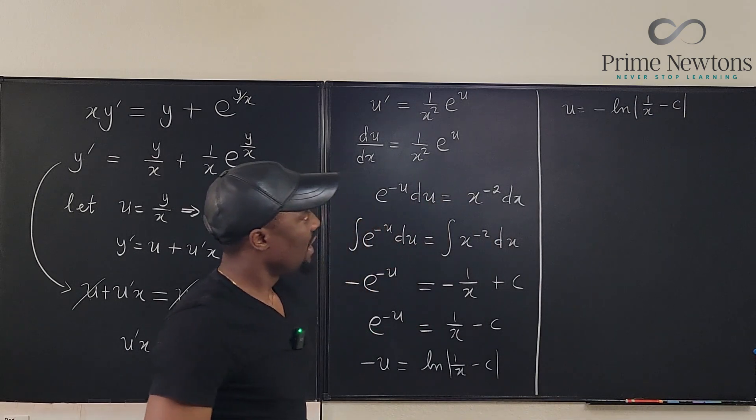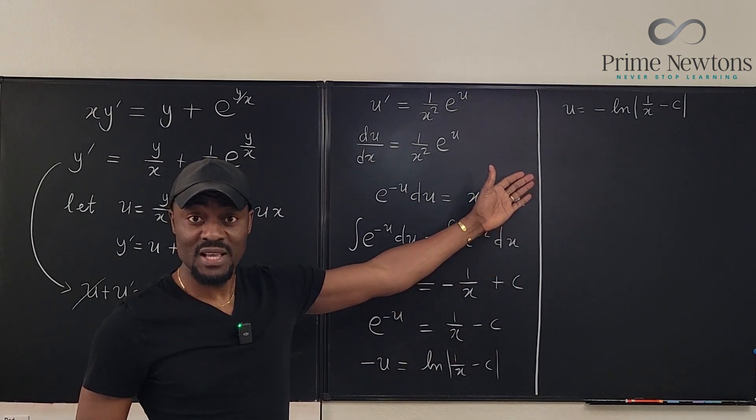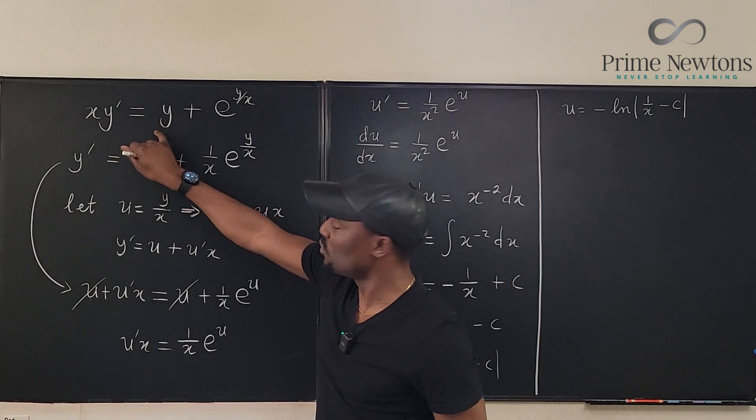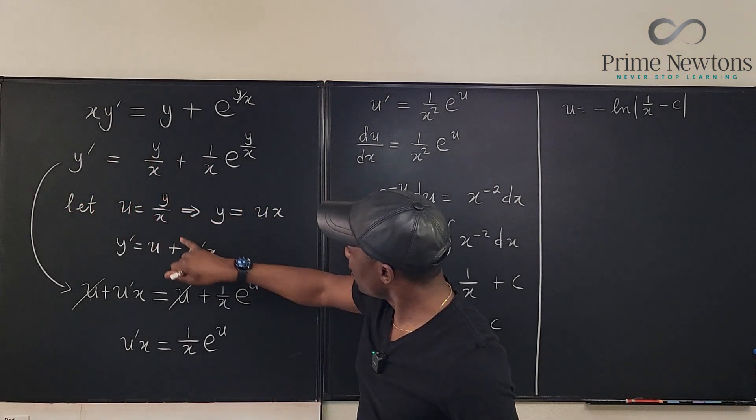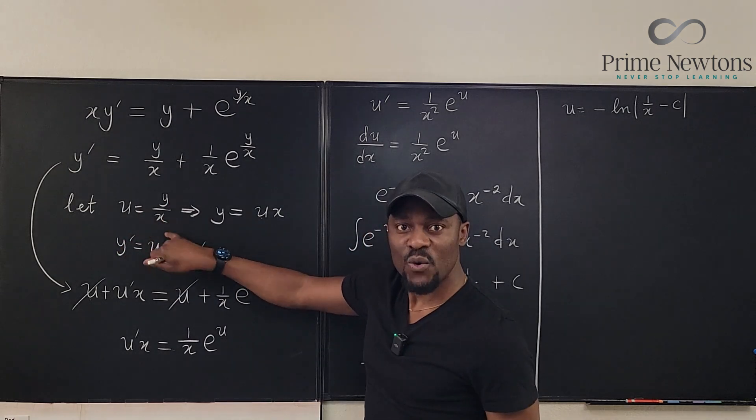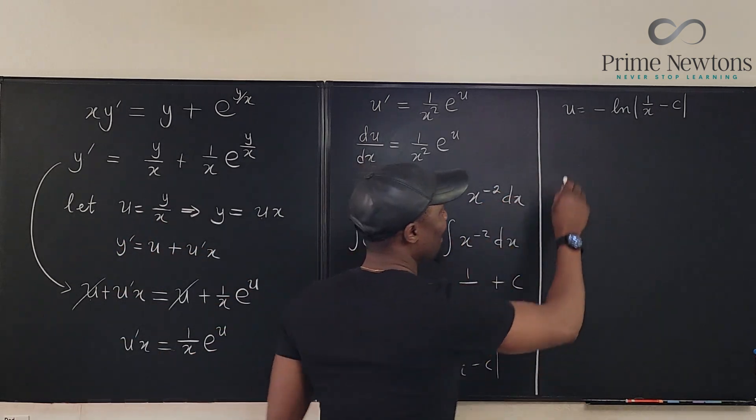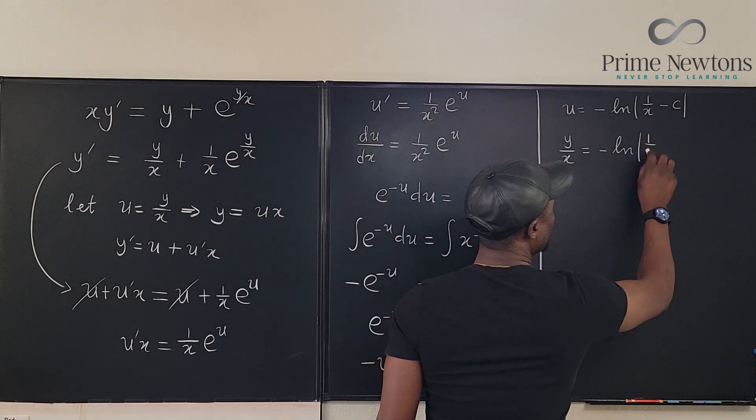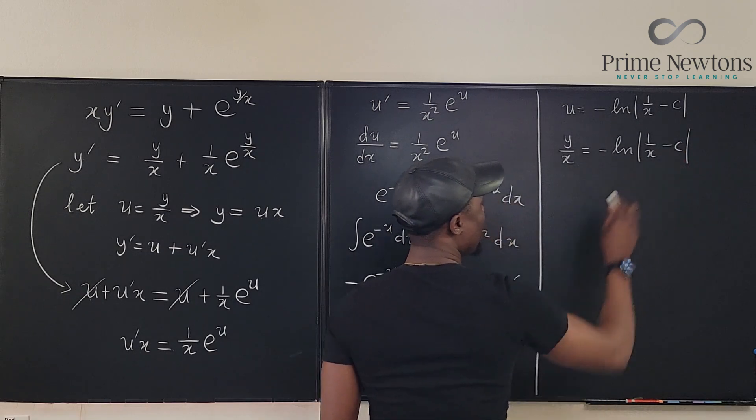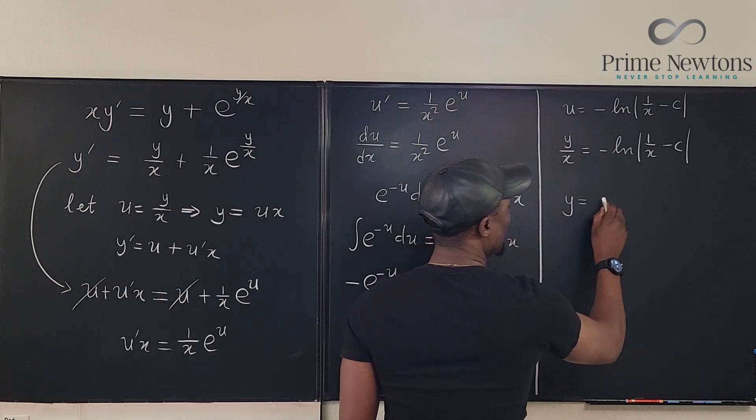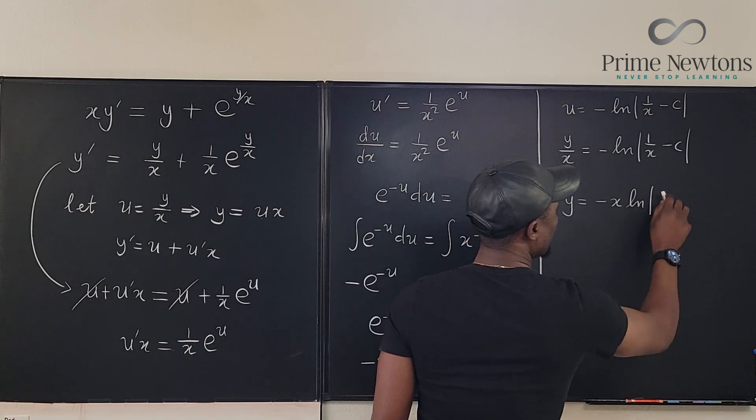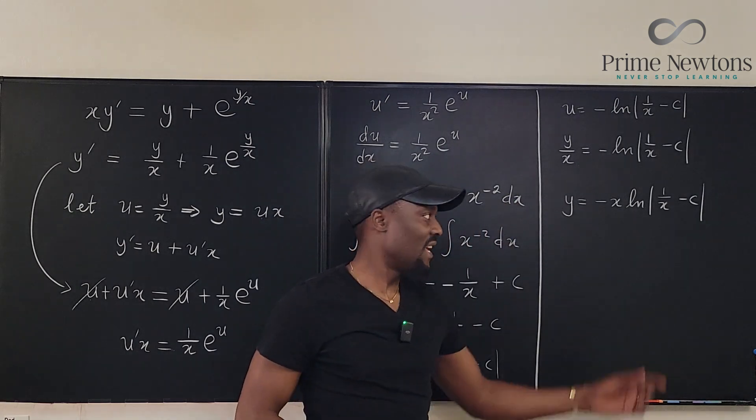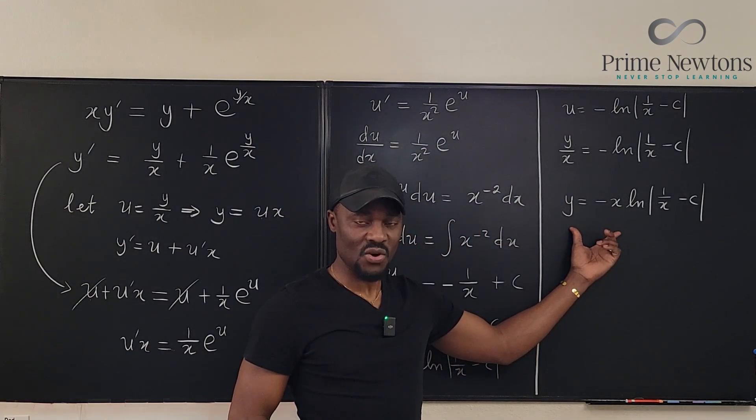We just found our u but remember this is the differential equation we're solving. We're solving for y. So what did we say u was? u is y over x. So we're going to go back here and write y over x equals negative ln of 1 over x minus c. Multiply both sides by x we have y equals negative x natural log of 1 over x minus c. And this is the general solution of this differential equation.